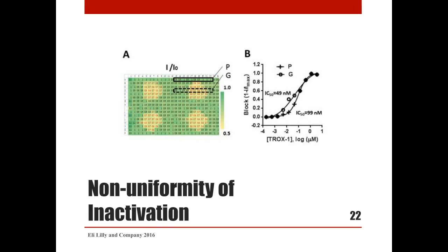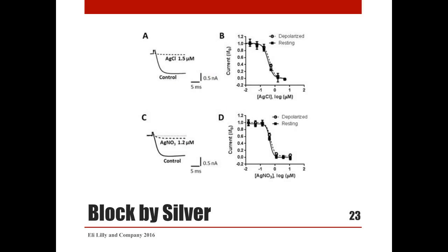Although initial experiments indicated good stability of recordings over time, we wanted to assess the stability of currents at partially inactivated voltages in more detail. We calculated the block produced by addition of buffer during the depolarized holding potential. The heat map of fractional current showed four areas of the patch plate where currents were substantially reduced. These areas coincided with the location of four ground electrodes situated underneath the patch plate, and the impact of such non-uniformity on concentration-response curves for verapamil is illustrated.